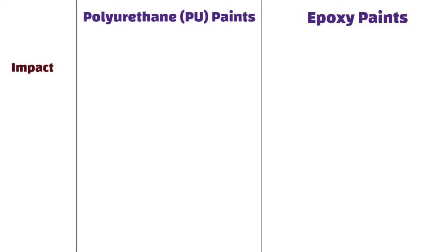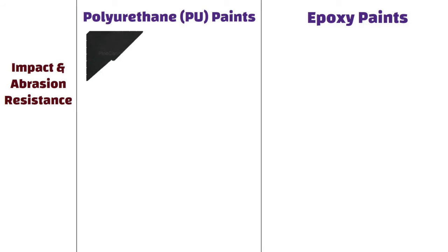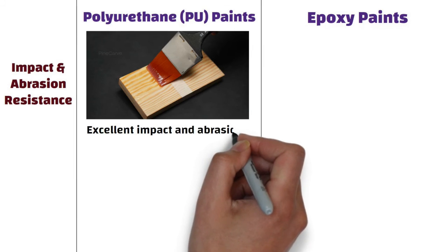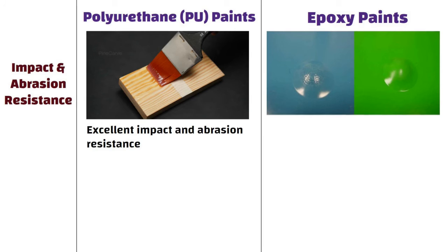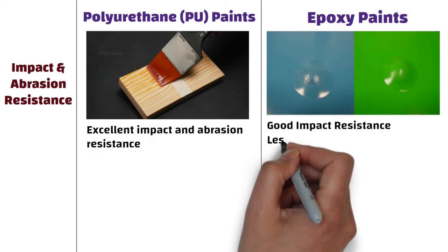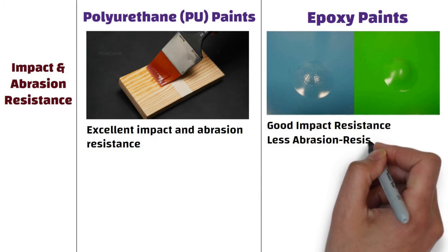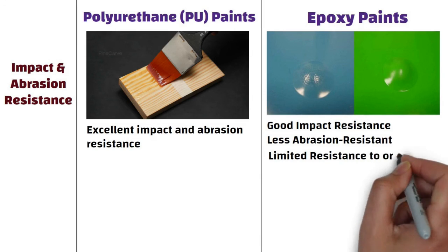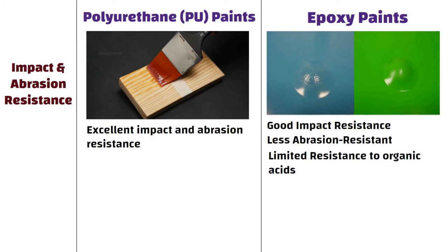Impact and abrasion resistance. Polyurethane provides excellent impact and abrasion resistance. On the other hand, epoxy provides good impact resistance but is less abrasion resistant than polyurethane. It also has limited resistance to organic acids in food and drink products.